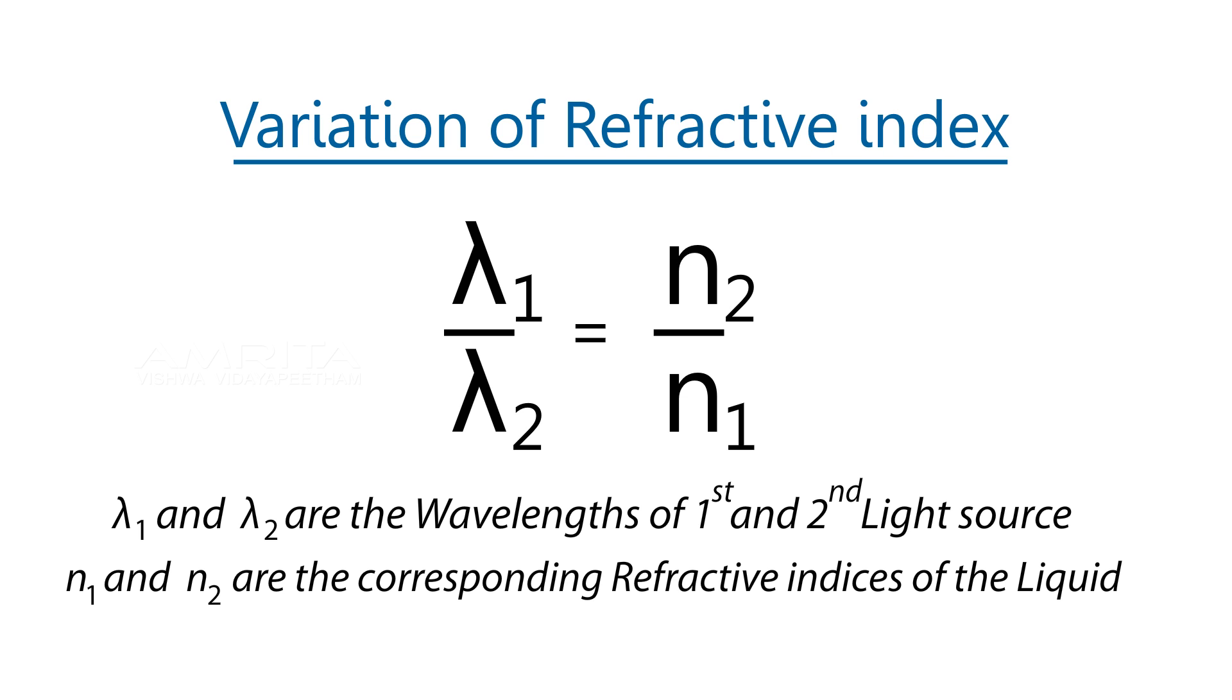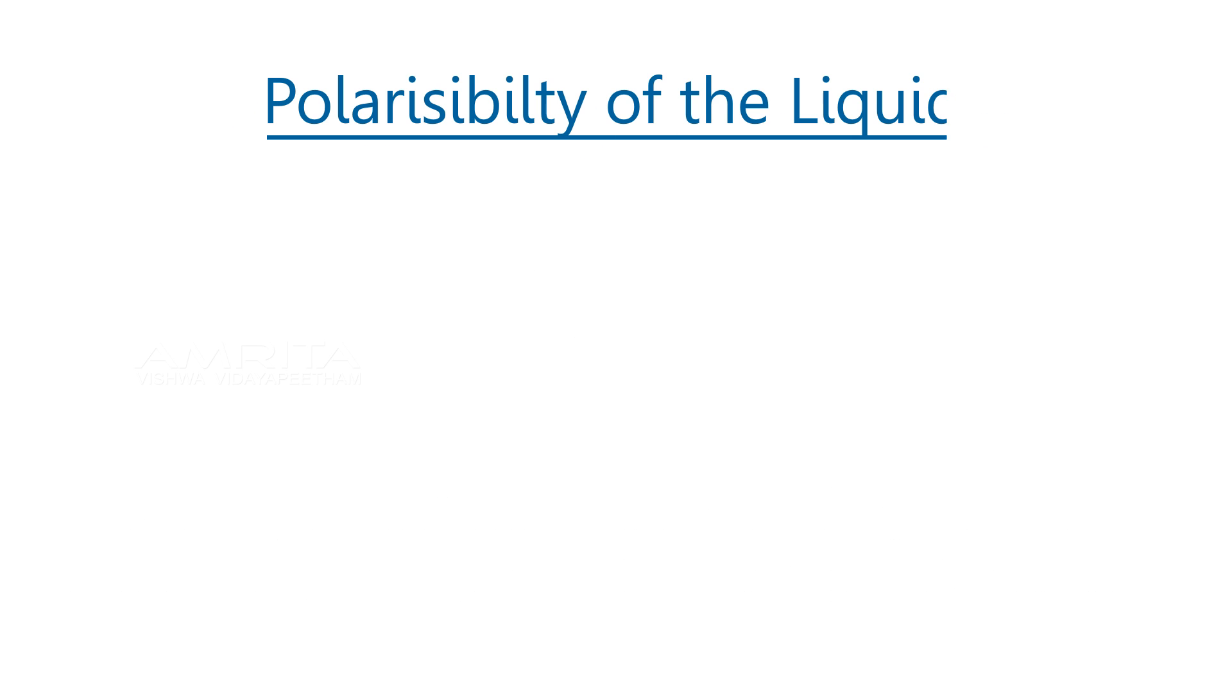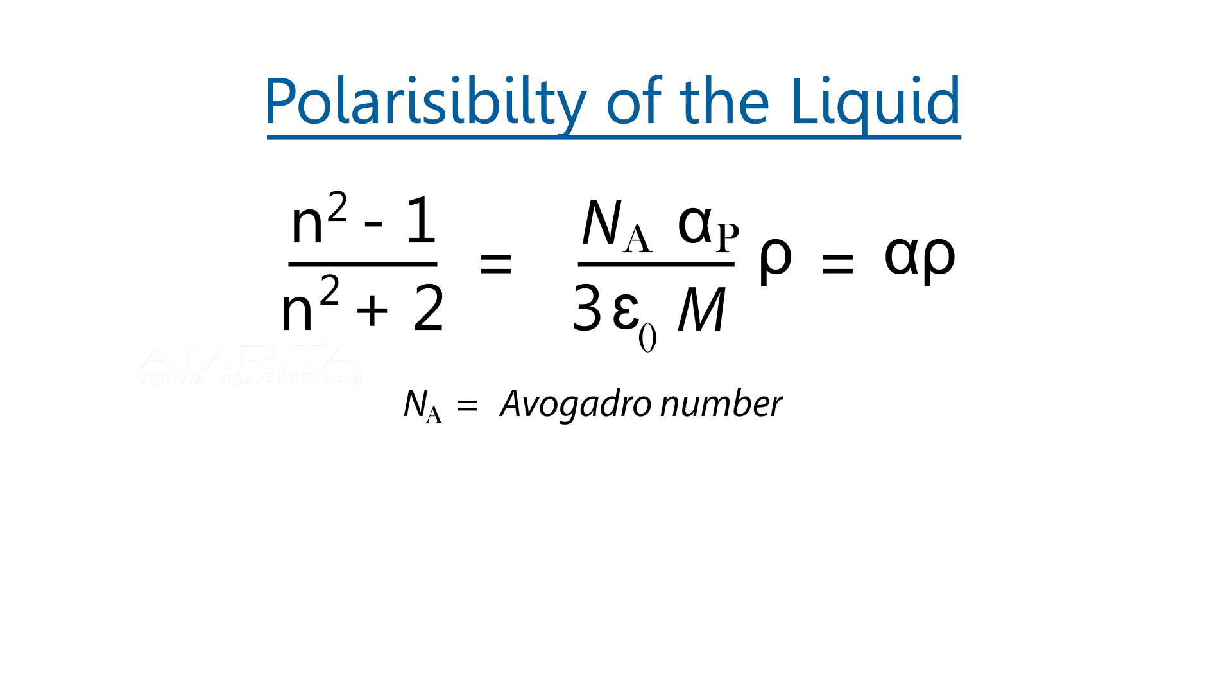Using Clausius-Mossotti relation, we can calculate polarizability of the given liquid, where Nₐ is Avogadro's number, ρ is density, M is molecular mass, αₚ is polarizability, and ε₀ is permittivity in free space.